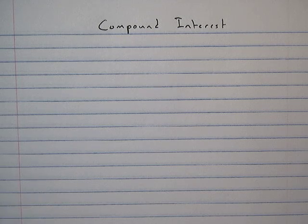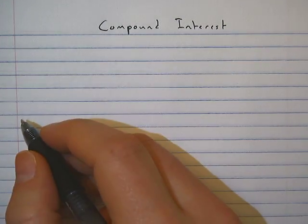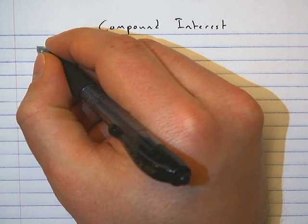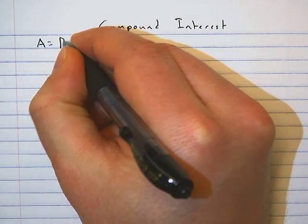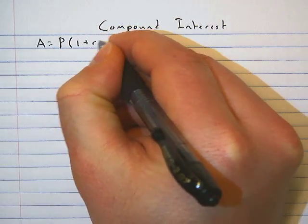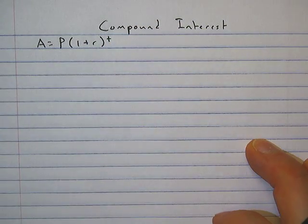We're going to stick with compounded annually for this video, so the formula is a little easier. The formula for compound interest compounded annually is A equals P times (1 plus r) to the t power.